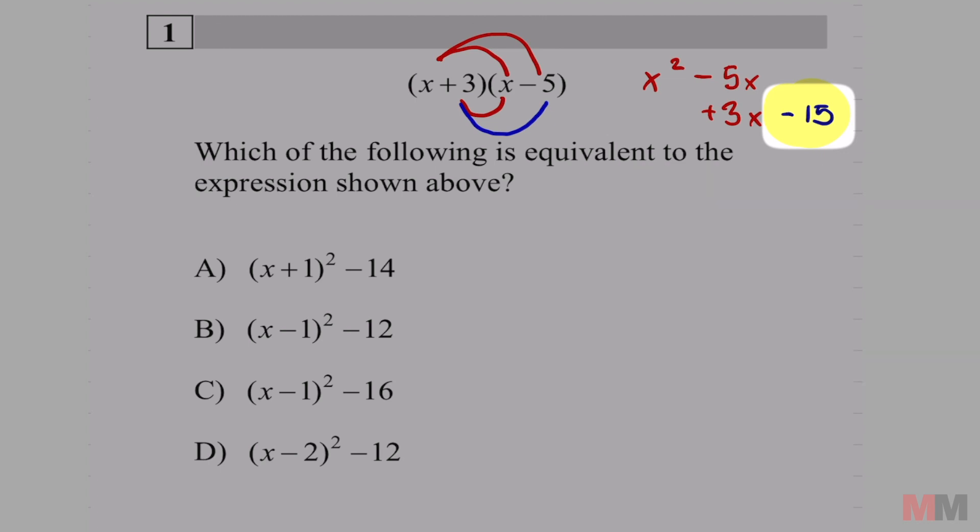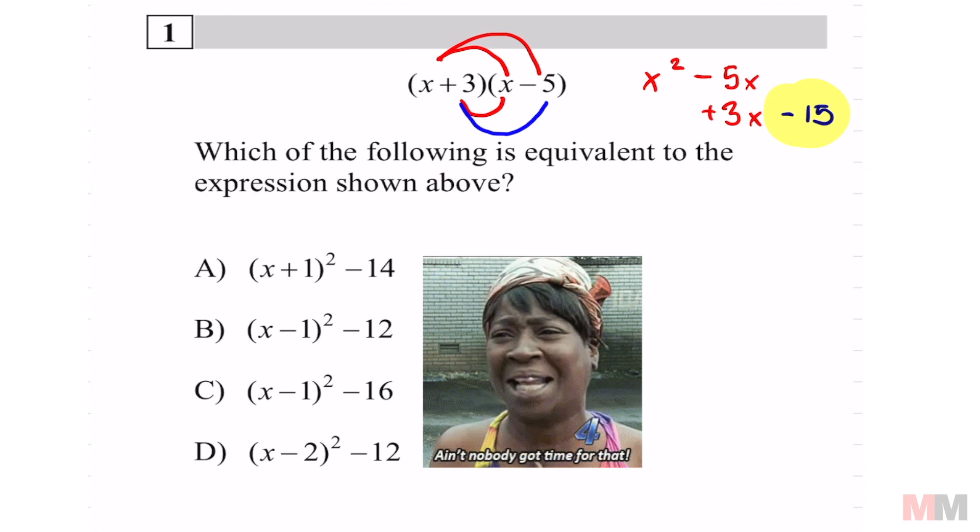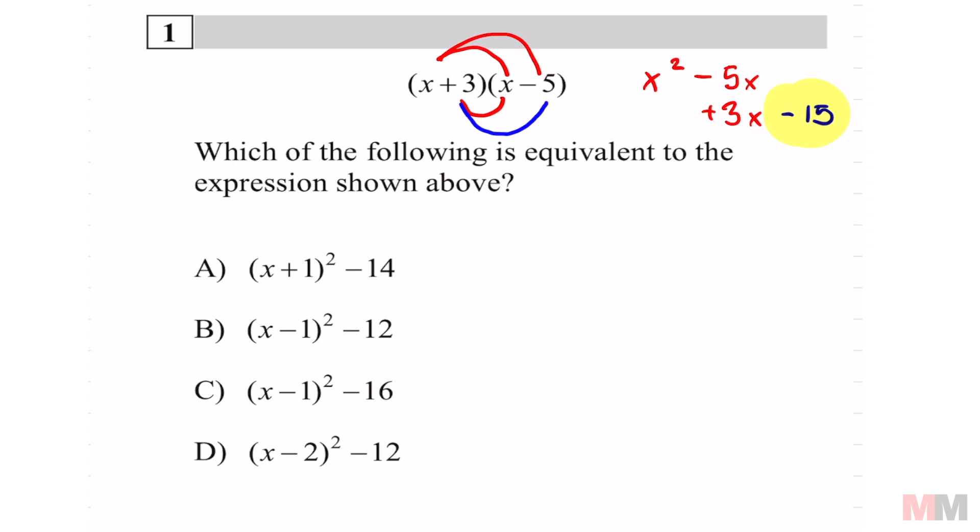So choices A, B, C, D has to have that same constant negative 15. We don't even need to do the full problem. There's no time for it. But I will show you A. I'm going to do A a little longer so you know where the shortcut's coming from.